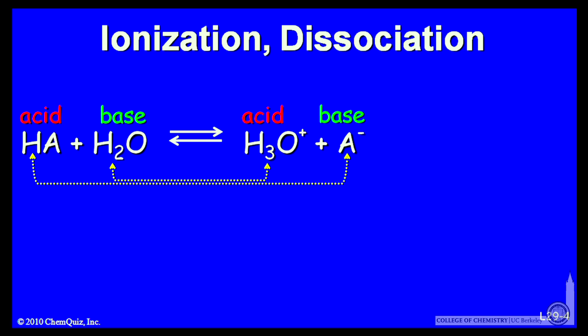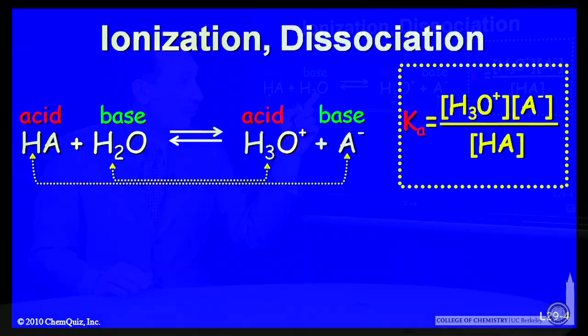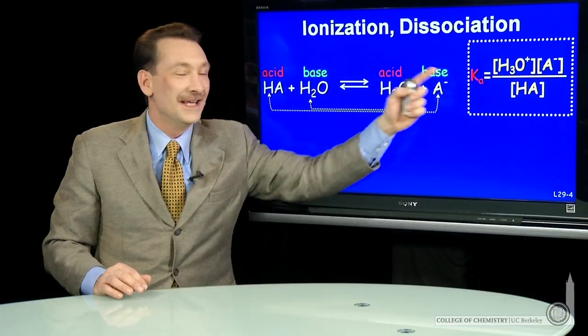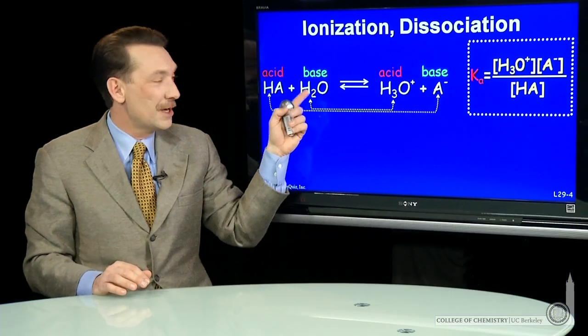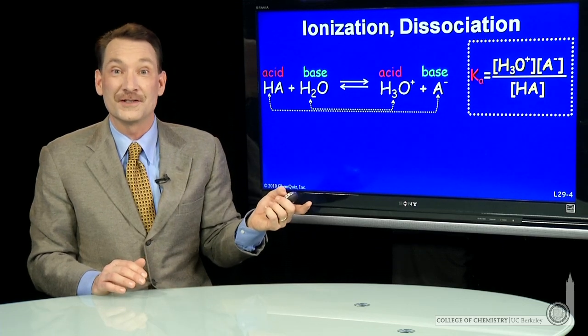We can write Ka, the equilibrium constant expression for this reaction. Ka refers to an acid dissociation. Ka is the products — H3O plus, A minus — over the reactants, HA. Water, of course, doesn't appear in the equilibrium constant expression, because pure liquids and pure solids don't appear in equilibrium expressions.